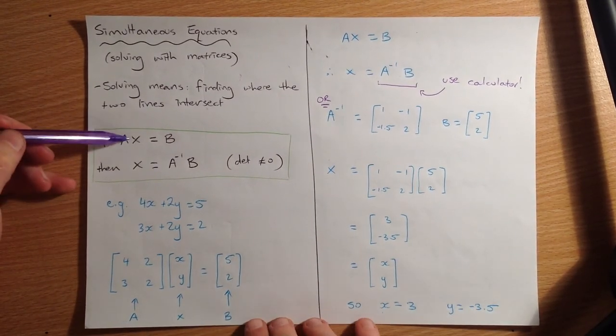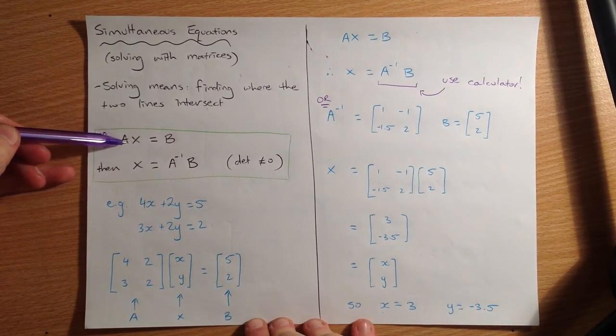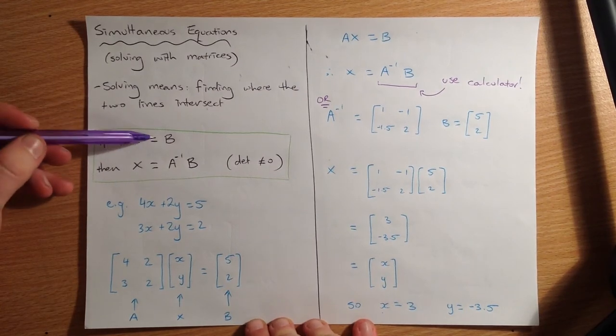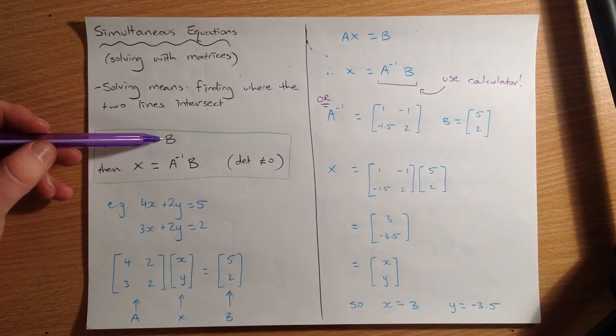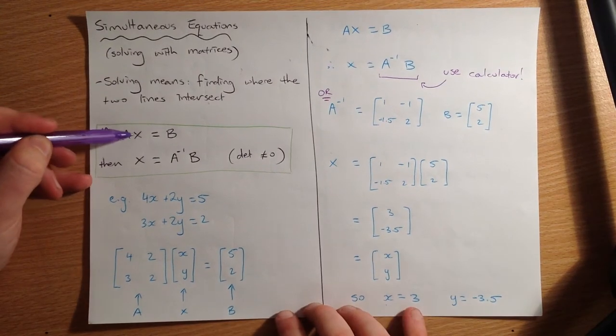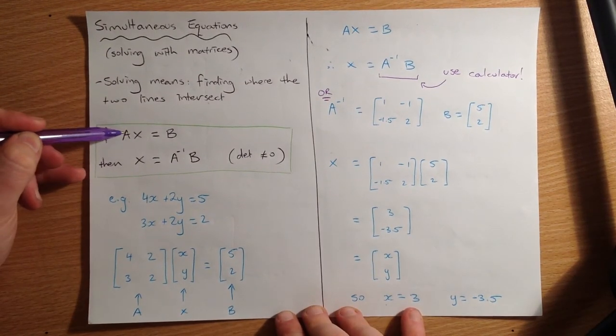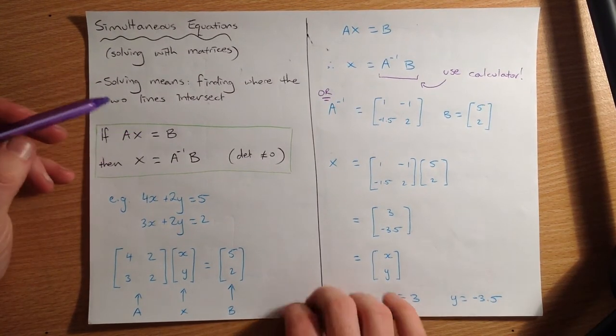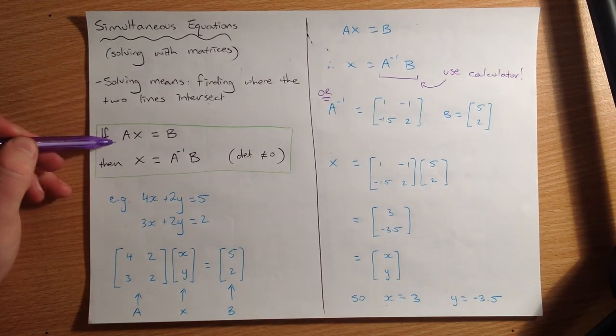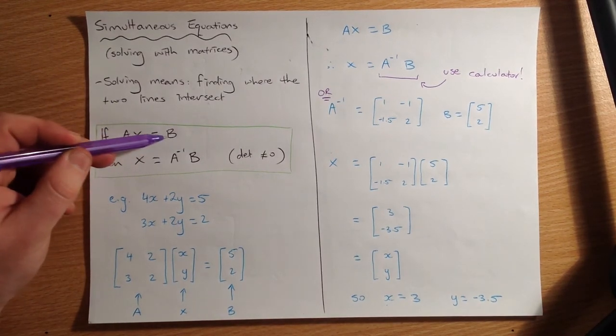So for example, if we have two matrices, matrix A times matrix X, and that happens to equal this extra matrix, matrix B, then if we want to just find out what this X matrix is, we can actually shift this A over. So not like in normal math, we can't just divide by A, and divide this side by A.